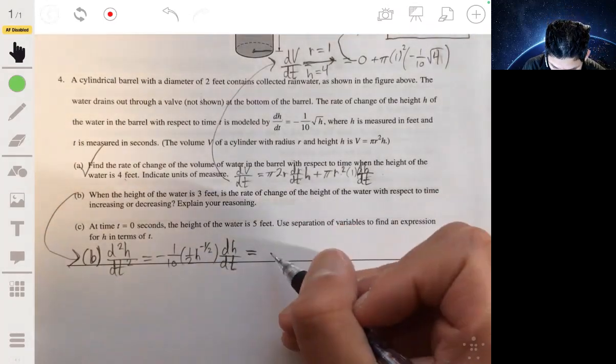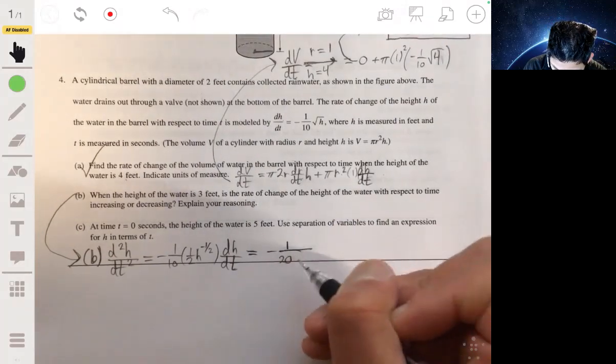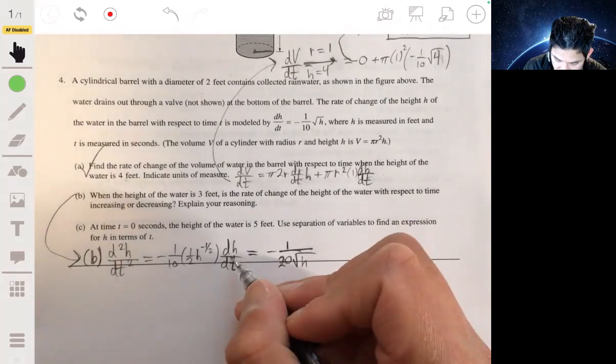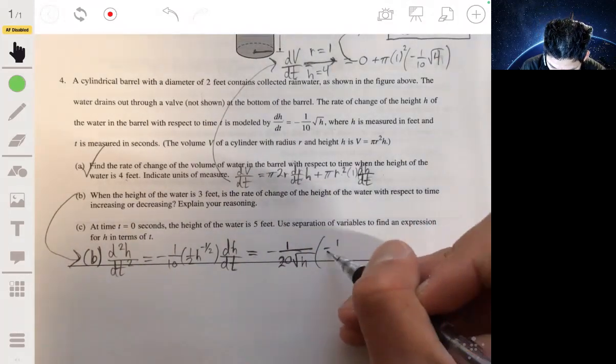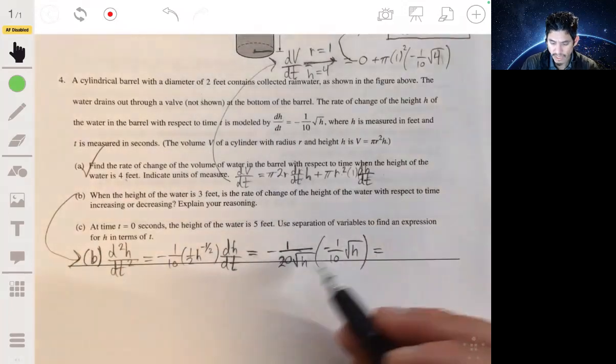Breaking this down, this becomes negative 1 over 20 times the square root of h. Times dh/dt, which originally is negative one-tenth times the square root of h.